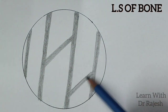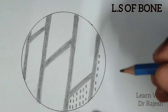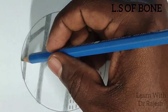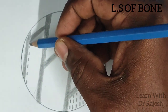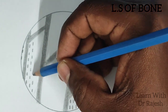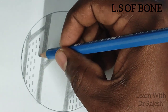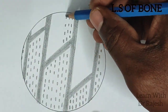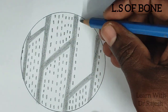These Haversian canals are connected by oblique lines, which represent Volkmann's canal. Now we draw the osteocytes. In the longitudinal section, the osteocytes are arranged in a vertical fashion. We draw them as parallel dots on the sides of the Haversian canal, and complete the entire slide by drawing these osteocytes.